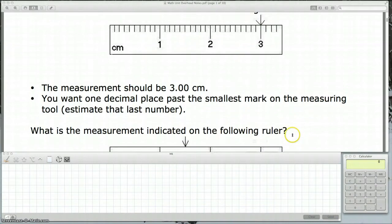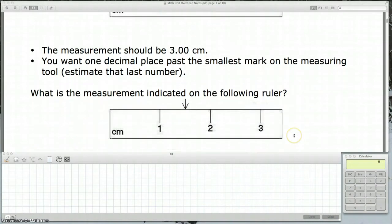And the last example here. What would you read that measurement as? To me, it's between the 1 and the 2, and it looks like it's right in the middle. So I'm going to say 1 because it's 1 something, it's between 1 and 2. And I'm going to say 1.5 because it looks to me right in the middle.